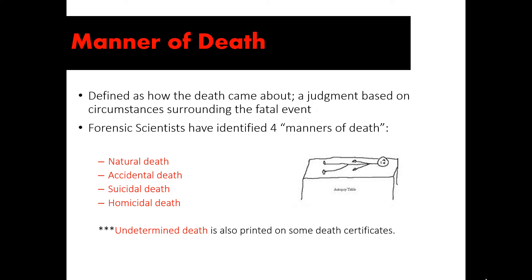Starting with manner of death: manner of death is defined as how death came about, and it's a judgment based on circumstances that surround a fatal event. There are four manners of death — natural, accidental, suicide, and homicide — and if one of those can't be determined, the death is classified as undetermined. When a person dies, a death certificate is created and one of these five options must be written on it. Natural death is simply when the body ceases to function on its own accord, or due to mitigating medical factors like terminal illness, heart disease, or another medical condition — sometimes referred to as death by natural causes.